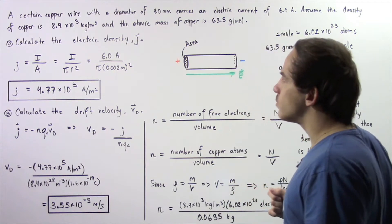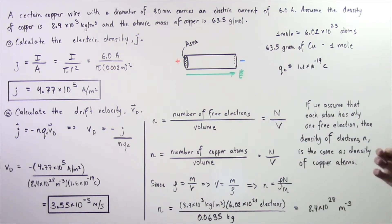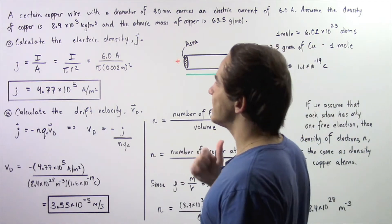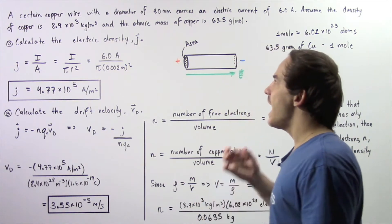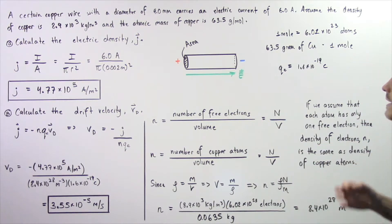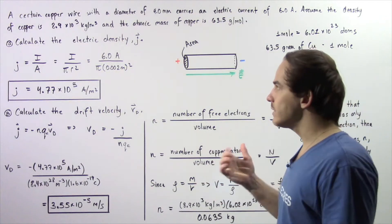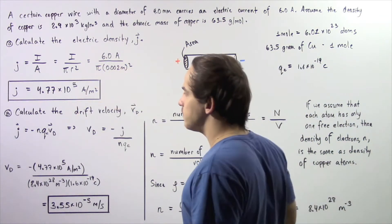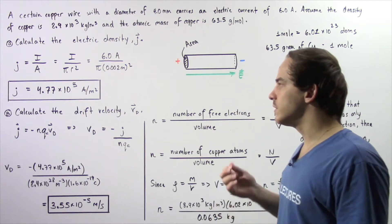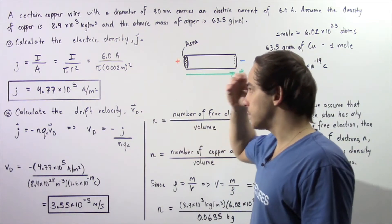Suppose a certain copper wire with a diameter of 4 millimeters carries an electric current of 6 amps. Assume the density of copper is 8.9 times 10 to the 3 kilograms per meter cubed, and the atomic mass of copper is 63.5 grams per mole. In part A, calculate the electric density J, and in part B, calculate the drift velocity of electrons given by v subscript d.